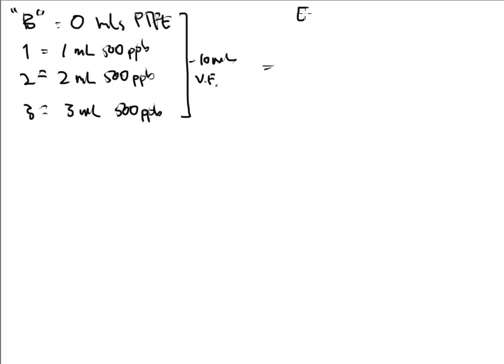For the first flask — just the sample — I didn't add anything at all, so I give it a concentration of zero. That's what we refer to as our blank. I didn't add concentration to it, so it's zero. That's the blank, that's the origin.